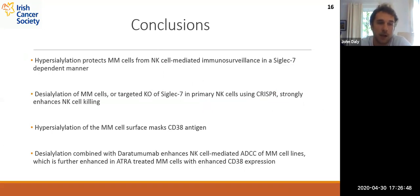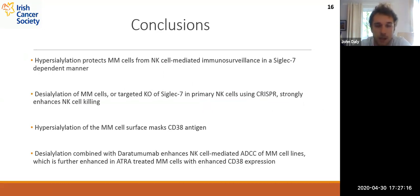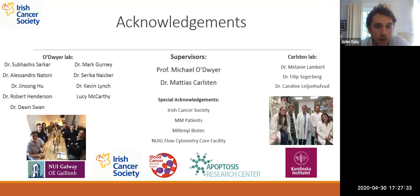In conclusion, hypersialylation protects myeloma cells from NK cell-mediated immunosurveillance, at least in part due to Siglec-7. Desialylation of myeloma cells or targeted knockout of Siglec-7 in primary NK cells using CRISPR strongly enhances NK cell killing against Siglec-7 ligand-expressing myeloma cell lines. We also showed that hypersialylation of the myeloma cell surface masks the CD38 antigen, and that desialylation combined with daratumumab enhances NK cell-mediated ADCC, further enhanced by ATRA treatment to upregulate CD38 expression. Thank you — I'd like to thank my supervisors Professor Michael O'Dwyer and Dr. Mathias Carlsson, my funders the Irish Cancer Society, and everyone in the O'Dwyer and Carlsson labs.